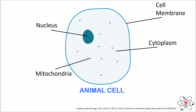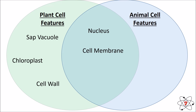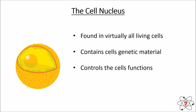Just to recap, let's have a look at all the things that our plants have and our animals have. Plant cells have got a sap vacuole, chloroplast, cell wall. Plant and animal cells have got a nucleus, cell membrane, cytoplasm and mitochondria. There is not one thing in an animal cell that a plant cell doesn't have. Make sure you know what they've all got.